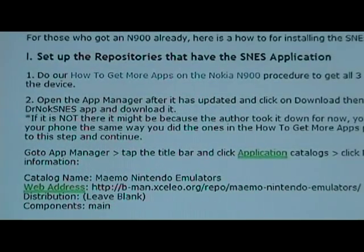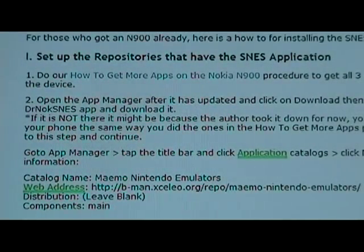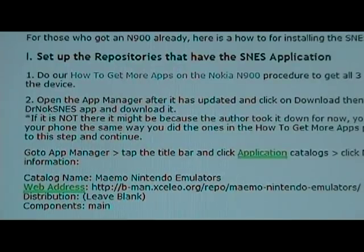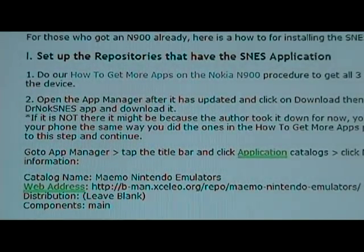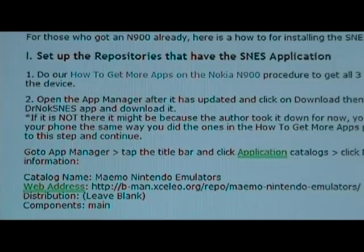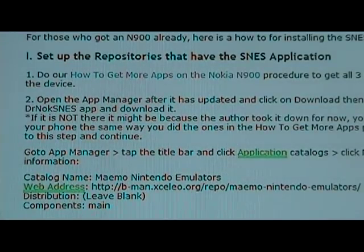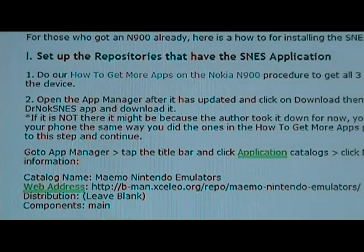First step, you've got to load the repositories onto the device that have all the apps. You can use our procedure that we've already created called how to get more apps on the Nokia N900. There's a link right there in the first step. Go do that procedure, complete it, and then come back to this and we can continue from there.